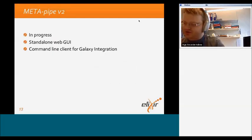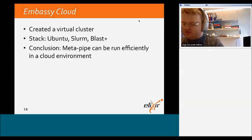We are currently in progress of implementing version 2 of MetaPipe. This version will have a standalone web GUI for submitting jobs. As part of our use case, it will be provided as an Elixir service. One of the things we did during our pilot was to explore and prototype with the Embassy Cloud at EBI. Our goal was to see how difficult it would be to deploy MetaPipe to the cloud. We set up a virtual cluster, installed Slurm and BLAST, and ran some tests with BLAST, which is the most compute-demanding step of MetaPipe. We found that BLAST runs efficiently on Embassy Cloud and concluded that MetaPipe will run efficiently in the cloud as well.